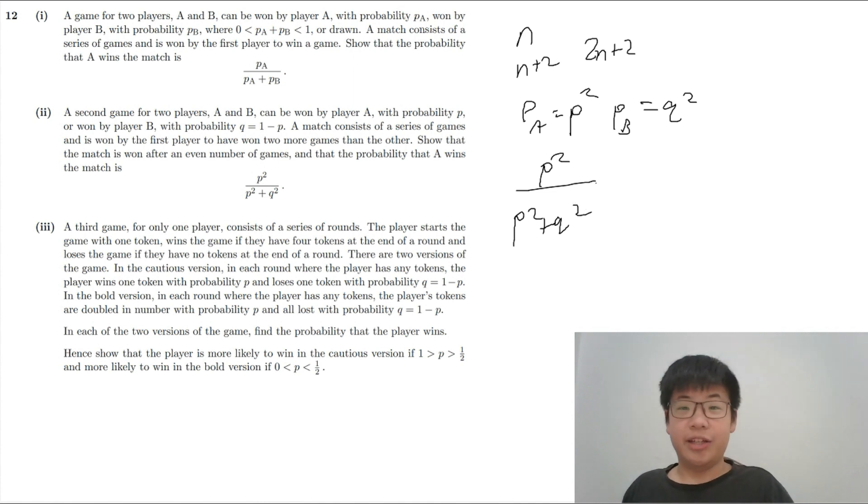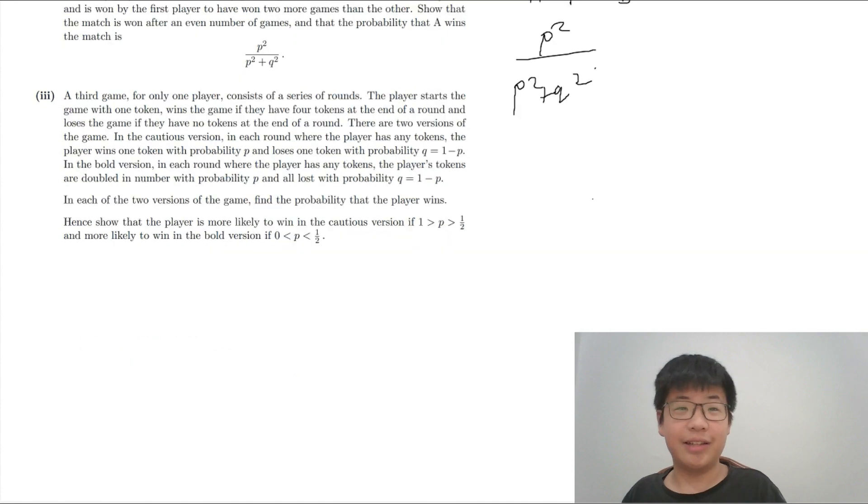A third game for only one player consists of a series of rounds. The player starts the game with 1 token, wins the game if they have 4 tokens at the end and loses the game if they have no tokens at the end. Now, you might be thinking, so this is the cautious one. So this means that it starts the game with 1 token, so P, 1 minus P, so plus 1. And then, on the cautious one, they lose 1 token and then on the bold version, times 2 and times 0.